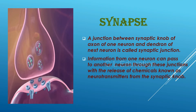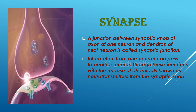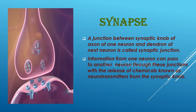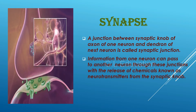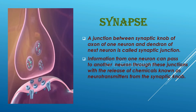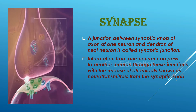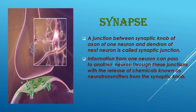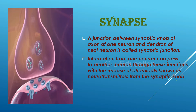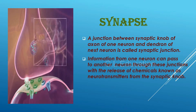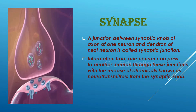Synapse: A junction between the synaptic knob of the axon of one neuron and the dendron of the next neuron is called a synaptic junction. Information from one neuron can pass to another neuron through these junctions with the release of chemicals known as neurotransmitters from the synaptic knob.